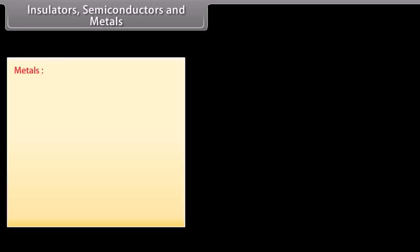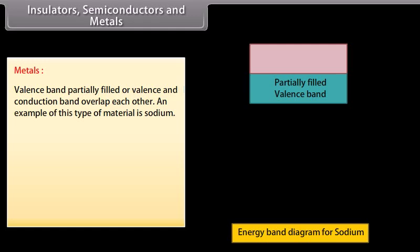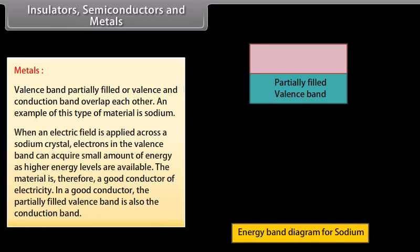Metals have a valence band that is partially filled, or the valence and conduction bands overlap each other. An example is sodium. When an electric field is applied across a sodium crystal, electrons in the valence band can acquire a small amount of energy as higher energy levels are available. The material is therefore a good conductor of electricity. In a good conductor, the partially filled valence band is also the conduction band.